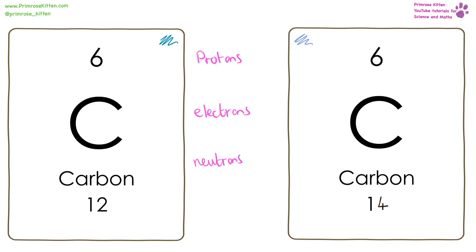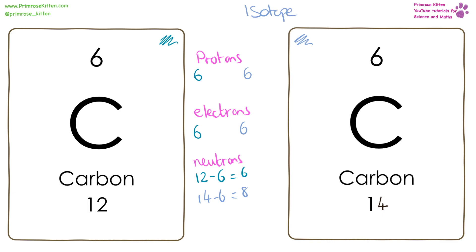Here we have two isotopes of carbon. You can see they have the same atomic number — 6 — but different mass numbers. Each of them is going to have 6 protons and 6 electrons. But when it comes to the mass number, one of them has 12 minus 6 = 6 neutrons, and one of them has 14 minus 6 = 8 neutrons. An isotope is an atom that has a different number of neutrons.